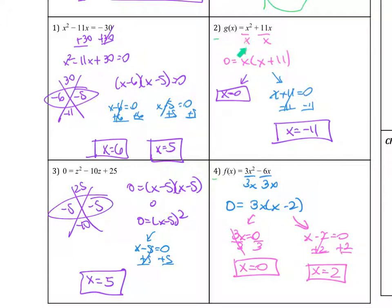For number 2, you can take out the GCF of x out of both. Don't forget that goes in the front because that is still one of our intercepts, one of our solutions. When you divide it, you're left with x plus 11. Then do the zero product property. x equals zero, that's one of our solutions. Then we have x plus 11 equals zero. Subtract 11, so x equals negative 11.